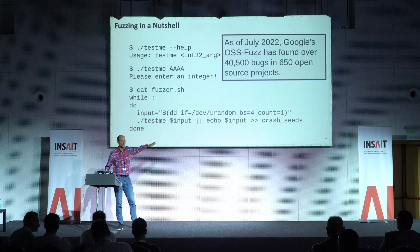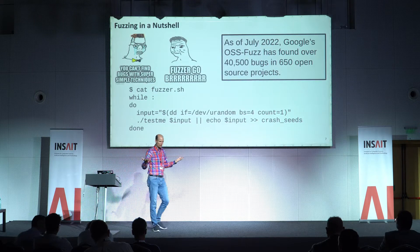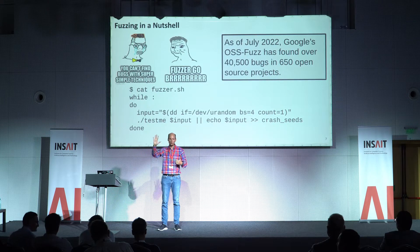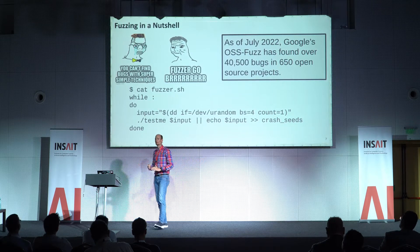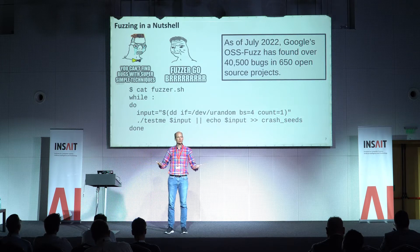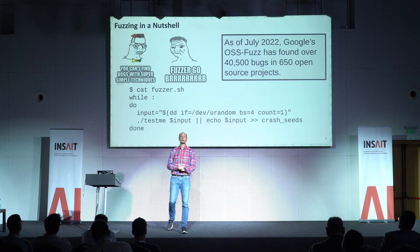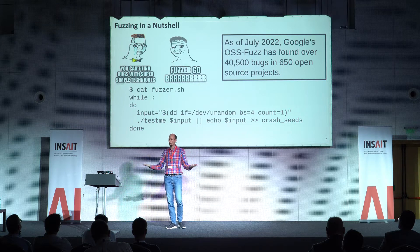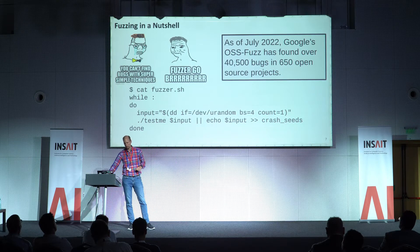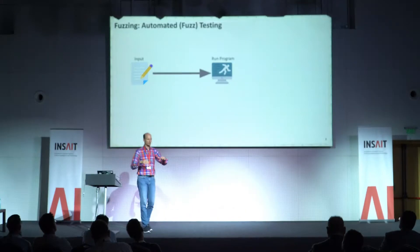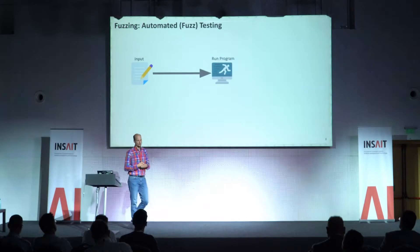If this is the only thing you take from this talk: fuzz your software and find as many bugs as possible. If you're a researcher, there are many interesting aspects on how to make fuzzing more efficient and effective. If you break down a fuzzer into a couple of different components, we can highlight where we can create improvements. On one hand, a fuzzer needs to have some input, so we can work on better mechanisms to create more structured, more aligned, better organized inputs to actually run the program.